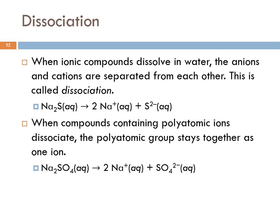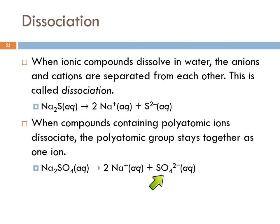When an ionic compound dissolves in water, we say that it dissociates. When something associates, it's coming together; dissociate means going apart. Sodium sulfide is an ionic compound — when it dissolves, it dissociates into its individual ions. When you have polyatomic ions, those polyatomic ions stay together as a group. It doesn't come apart into individual elements. Sodium sulfate dissociates into sodium ions and sulfate ions — the ions separate but the polyatomic ions remain intact. We don't get sulfur and oxygen ions; we just have the sulfate ions.